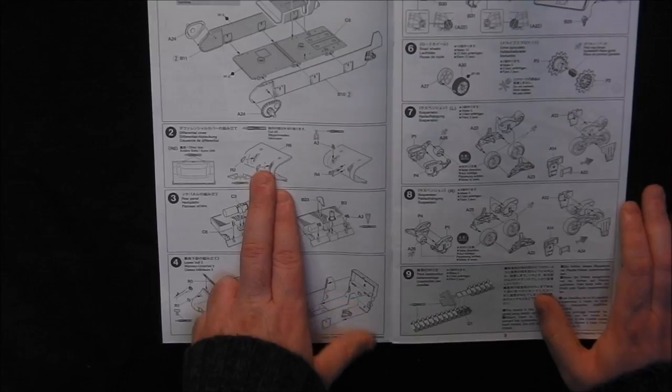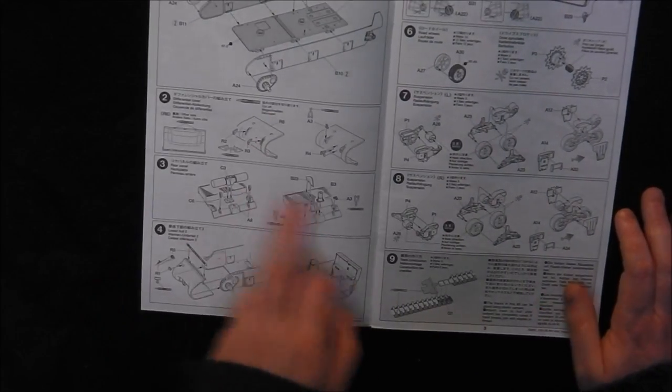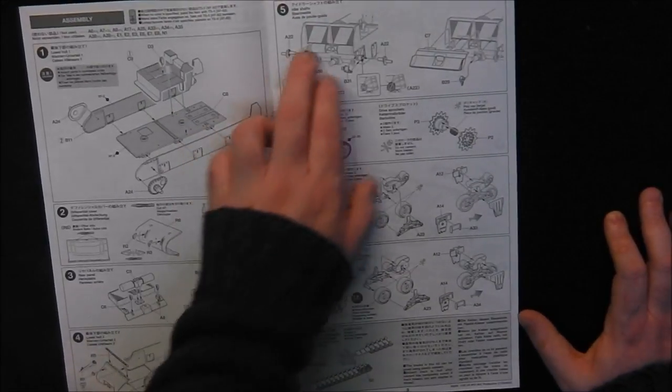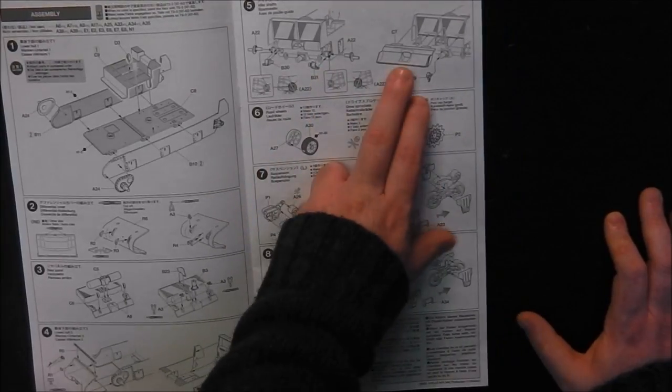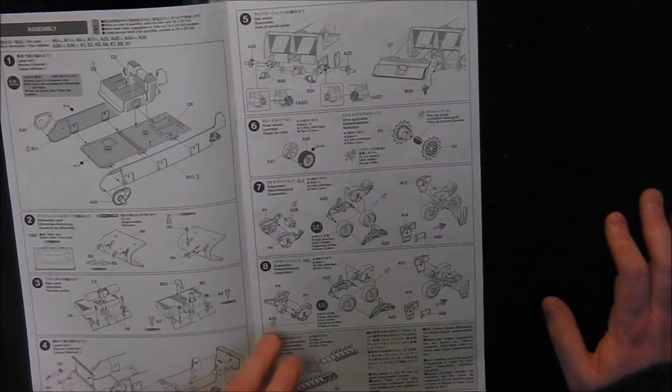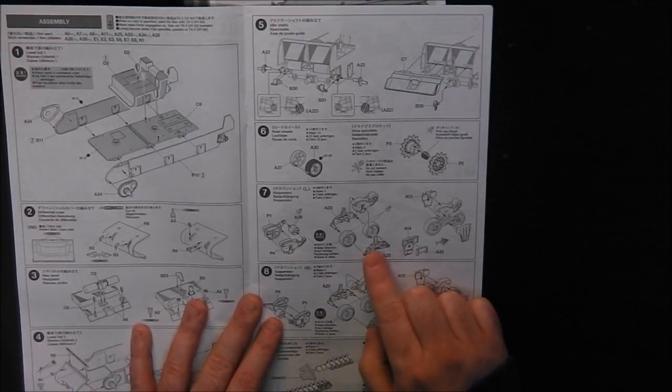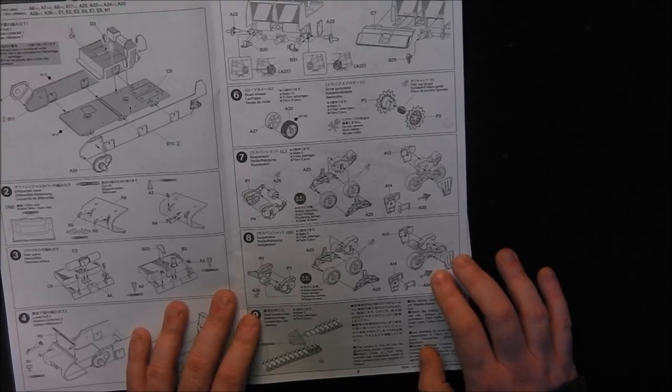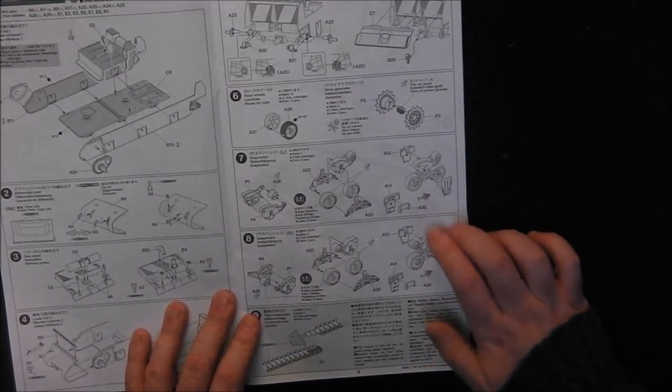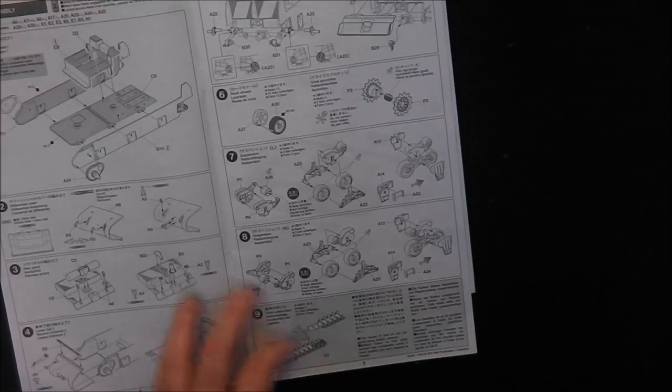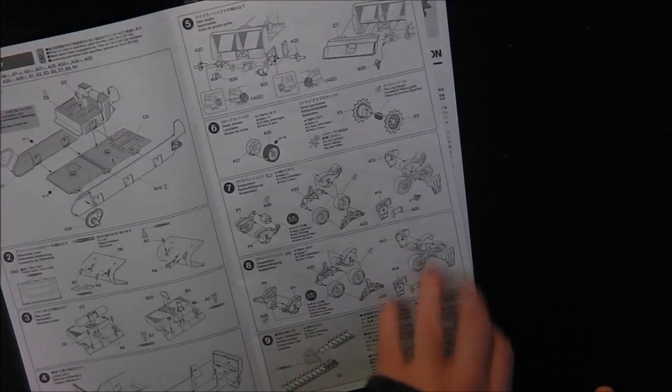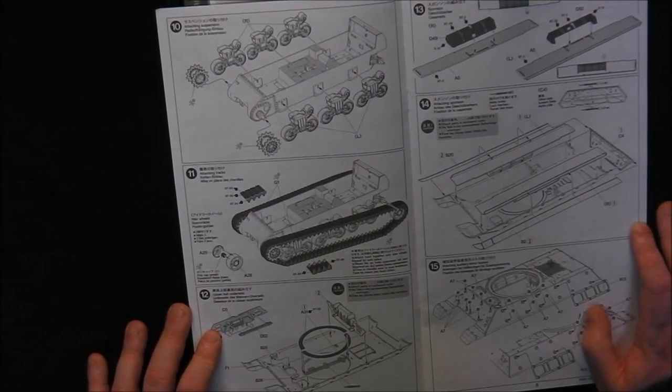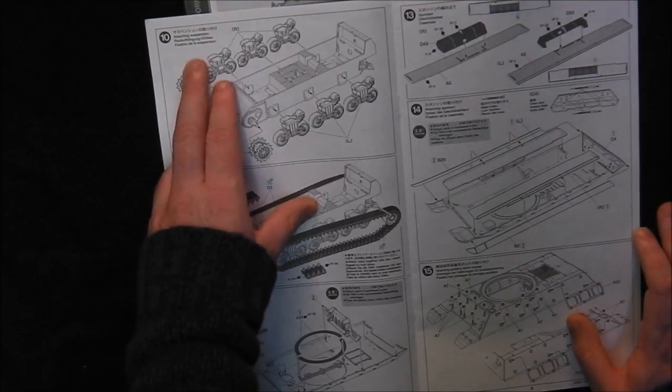Step 2, we're going on to the transmission cover or the differential cover and rear panel with our exhaust system. Step 3, adding more lower details and mounting the rear plates. Step 5, we have mounting our idler tensioners, our deflector for the exhaust, and then onto the running gear. The running gear seems to be somewhat different. I haven't seen them build running gear like this before, and I'm not entirely sure if this is workable or not. Then we're adding our suspension, the bogies.